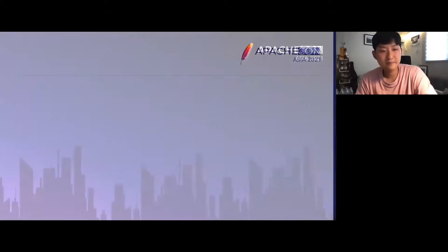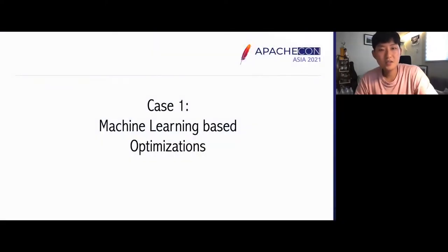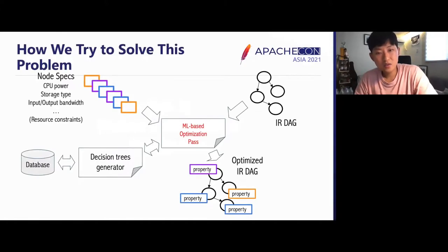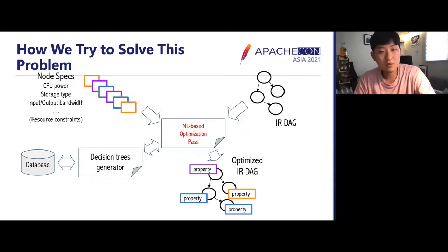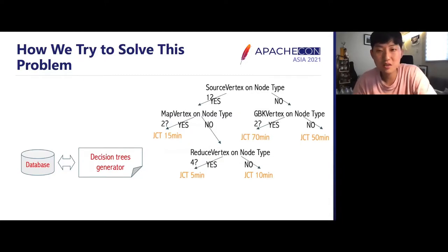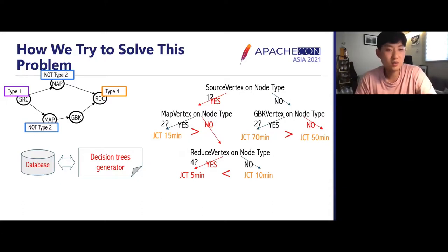Before I finish, let me mention a few ongoing works on top of Nemo. First is applying machine learning for optimizations to solve the resource constraints problem regarding different resource environments. We propose providing specifications of available resources for certain workloads and using machine learning to place different operator vertices to specific resources that can execute work most efficiently. We store metric data along with IR DAG information in a database and use it to generate decision trees using tree boosting or other tree generation techniques. These decision trees lead to different job completion time outcomes and can be applied to an IR DAG to produce smaller job completion times. This is early-stage research.